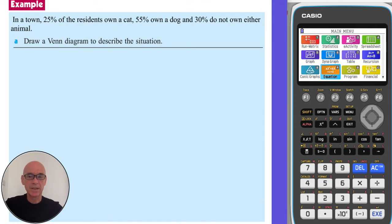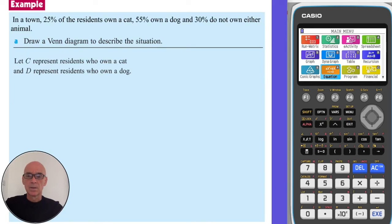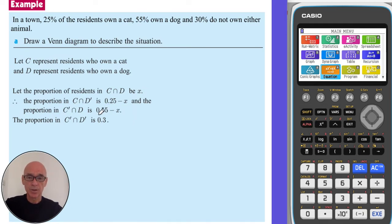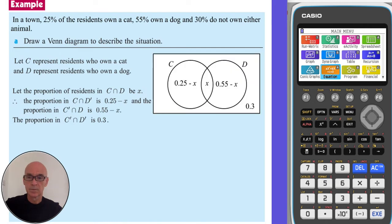In this question we're asked to draw a Venn diagram to illustrate the situation. Letting event C represent residents who own a cat and event D represent residents who own a dog, we don't know the percentage who own both, so we represent the intersection with x. The proportion that only owns a cat is 0.25 minus x, and the proportion that only owns a dog is 0.55 minus x. The Venn diagram also includes the 30% who own neither, which is 0.3.